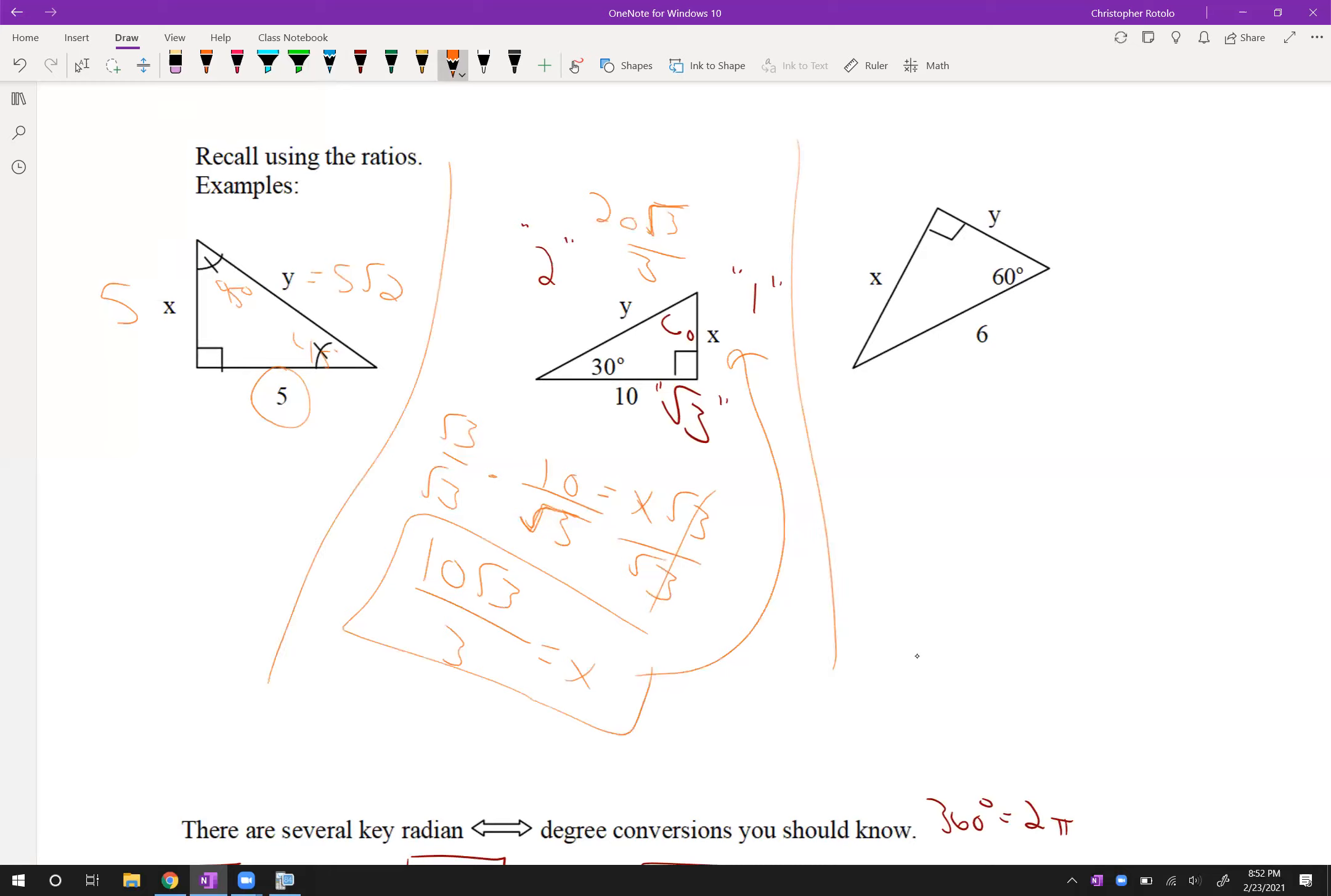If it took 10 root 3 over 3 and multiplied by 2, it would give me 20 root 3 over 3. Okay, so that one we have to work a little bit backwards. And obviously the 30-60-90 is going to be a little bit harder.